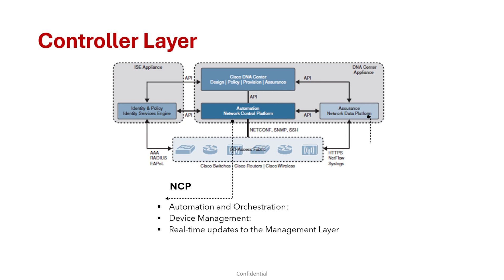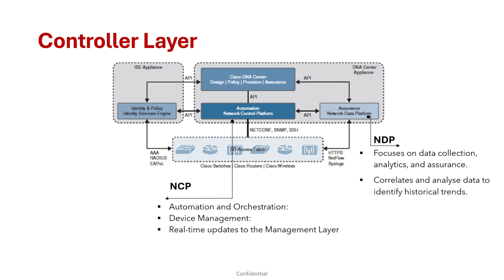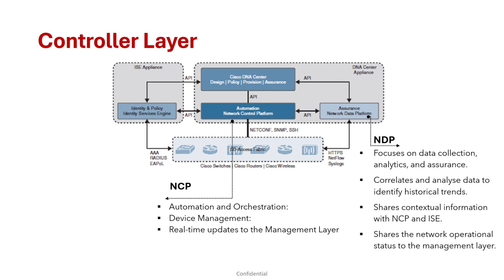Another component is NDP, the Cisco Network Data Platform, also embedded in Cisco DNA Center, which focuses on data collection, analytics, and assurance. It collects data related to various network events from multiple sources like NetFlow and SPAN, then correlates and analyzes that data to identify historical trends. It shares this contextual information with NCP and ISE to enhance automation and policy enforcement. NDP also shares network operational status and other information with the management layer.